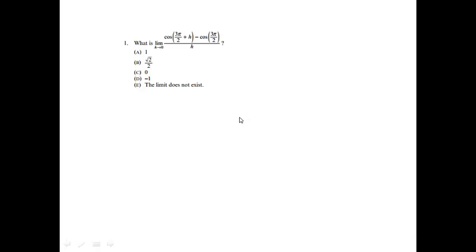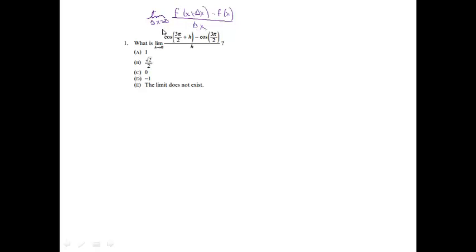Question 1: what is the limit as h approaches 0 of cosine(3π/2 + h) minus cosine(3π/2), all over h? The number one thing in this problem is you want to figure out what this means. This definitely matches the formula for the definition of the derivative, just a few things are changed. So the second that I see that, I know I'm going to be using the definition of derivative formula.